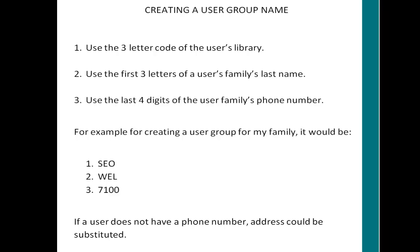For example, if you are creating a user group for my family, it would be SEO — the first three letters of my last name, WEL for Welsh — and the last four digits of my telephone number, 7100. So the user group name would be SEOWEL7100 with no spaces. If a user does not have a phone number, an address could be substituted.